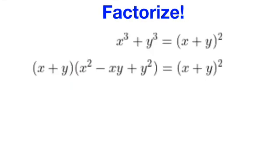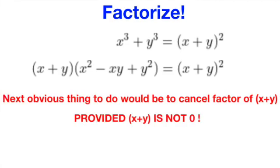With this said, let's factorize the left hand side of the equation to get x plus y multiplied with x squared minus xy plus y squared. The next obvious thing to do is to cancel off the factor of x plus y, but before we can do that, we do need to make sure that we are not dividing by 0. So we have to stipulate the condition that x plus y isn't 0.